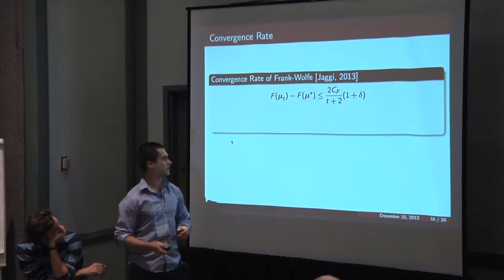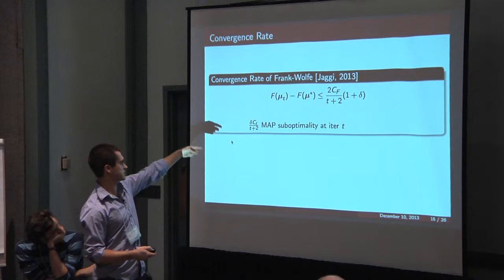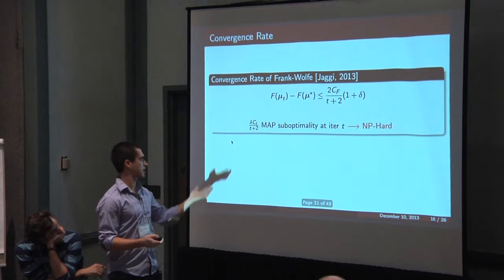In terms of the convergence rate, we basically have two parameters in a sort of modern analysis of this. I'm going to talk about the delta one first. So basically delta dictates your sub-optimality at iteration T.